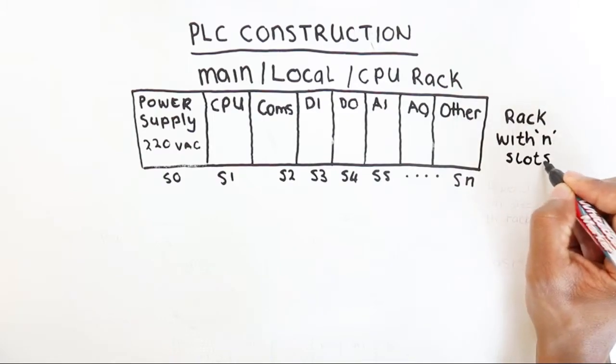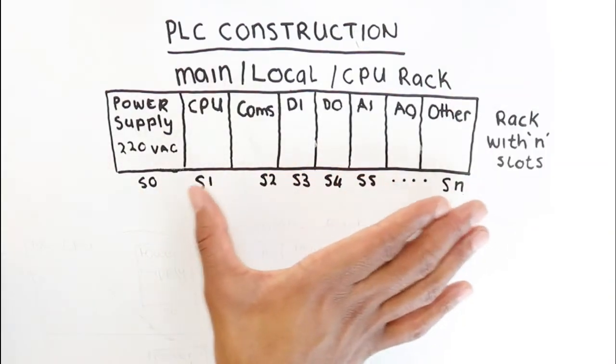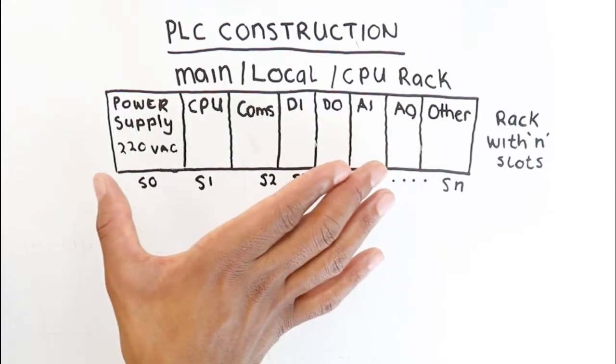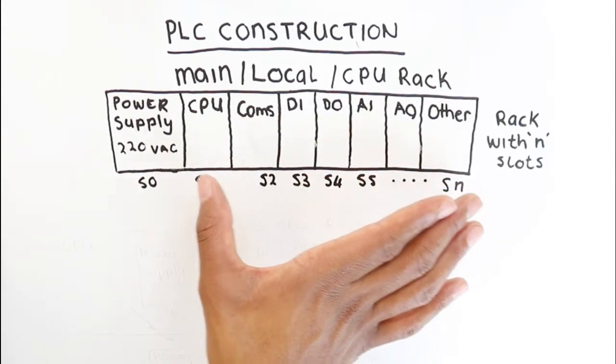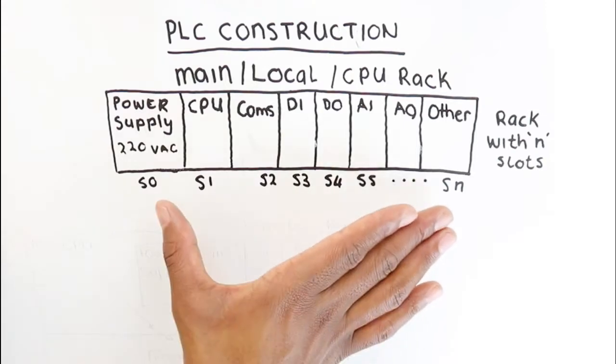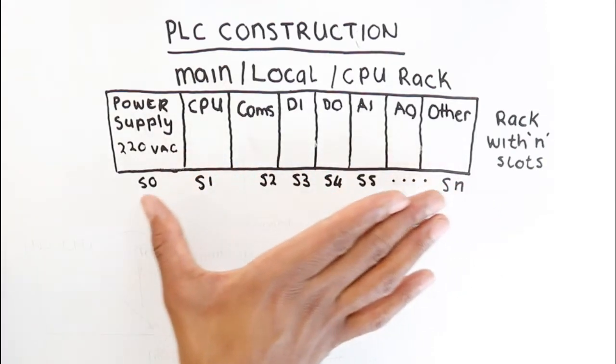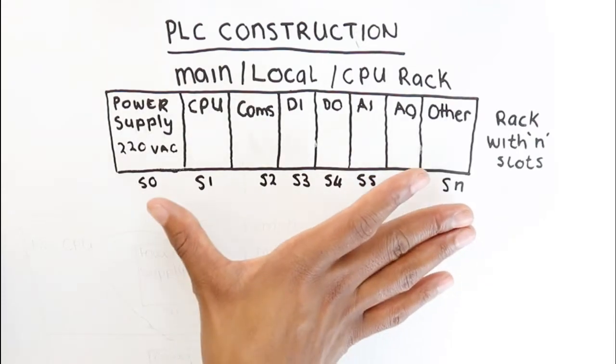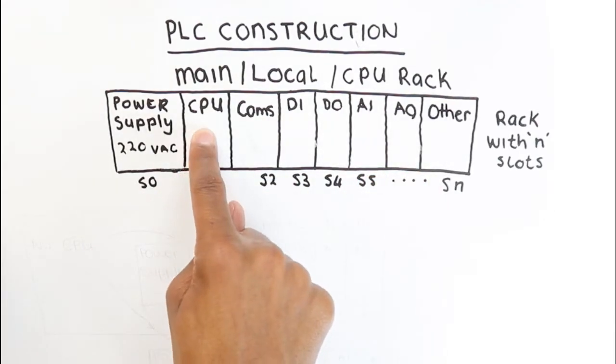This is a general construction of a PLC, and the general construction of a PLC is in the rack configuration as shown here in this example. This is just a general example of how a typical PLC rack would look like. On the first rack of the PLC that you have, that will contain the CPU.